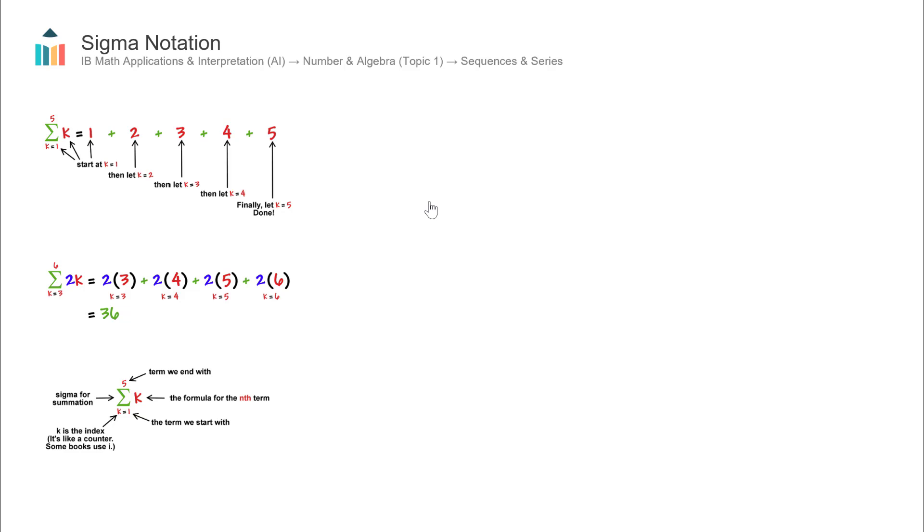It's just a concise way of writing out the sum of a certain number of terms in a sequence. Let's talk through an example here. We have this symbol here, a Greek letter called Sigma, like a big reverse S. This symbol itself actually means sum.